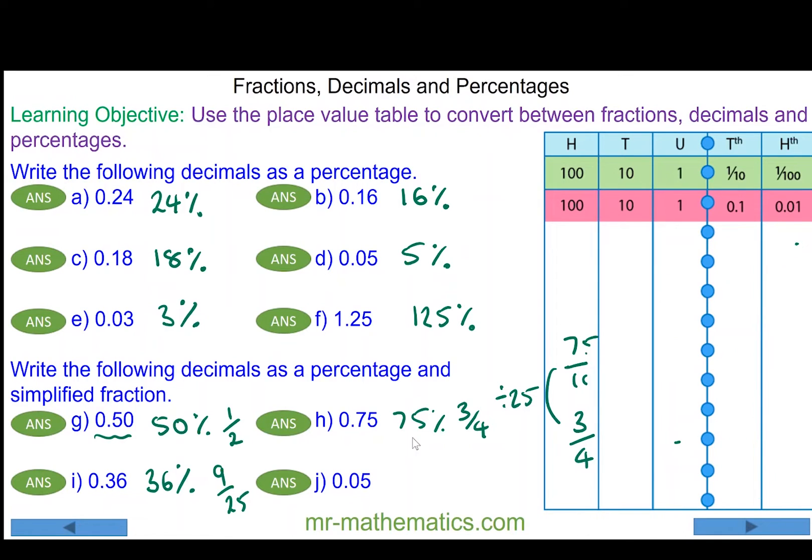And finally, for question j we have 0.05, which is five percent, five over a hundred, which we can simplify by dividing denominator and numerator by five. We have one twentieth.